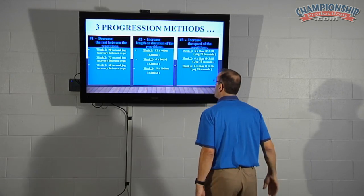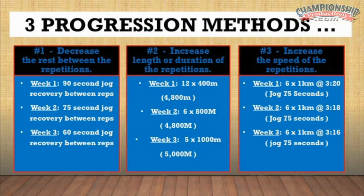Another method of increasing the overload is number three, where you see a progression in paces. The same volume — six times one kilometer — is used for each of the three weeks. Recovery is retained at 75 seconds for each of the three weeks. The only thing that improves is the speed or pace, dropping from three minutes 20 seconds to three minutes 18 seconds to three minutes 16 seconds. That is something I would typically assign during the middle of the season when I know the athlete is stable.